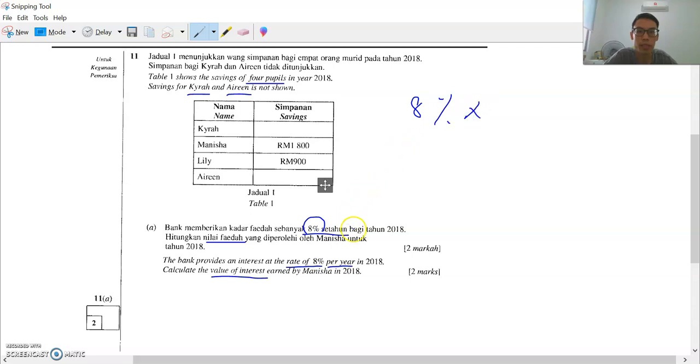Times the simpanan. So calculate the one for Manisha. Manisha is RM1800. So 8% nilai faedah times simpanan Manisha seribu lapan ratus. Step 2: 8% you put it over 100. We change to fraction, tukar kepada pecahan. Put it over 100, per seratus, and then you times simpanan Manisha 1800.